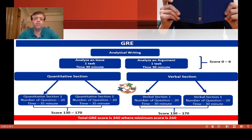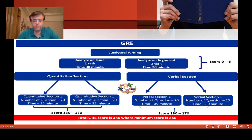After the essays, you get the Quantitative and Verbal sections — the first may be either a quant or verbal section. The Quantitative section is your math portion and the Verbal section is your English portion. You will have two quant sections; in each you get 20 questions and 35 minutes, meaning roughly one minute and a few seconds per question. The quant score range is 130 to 170, where 130 is the minimum — received if you answer no questions correctly — and 170 is the maximum.